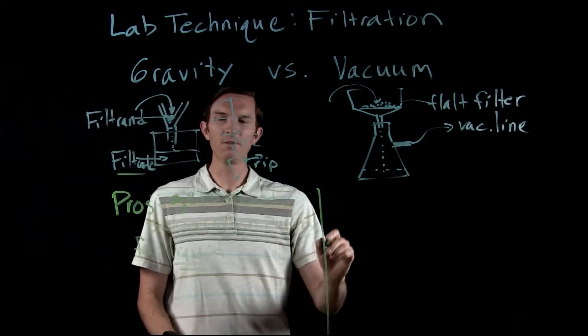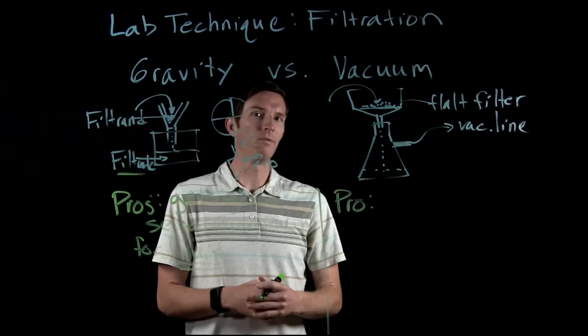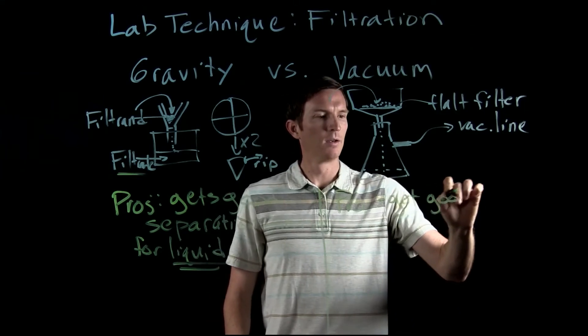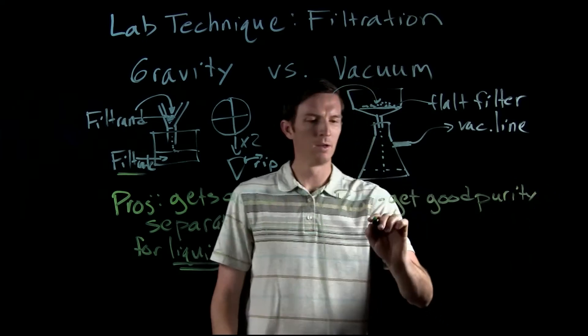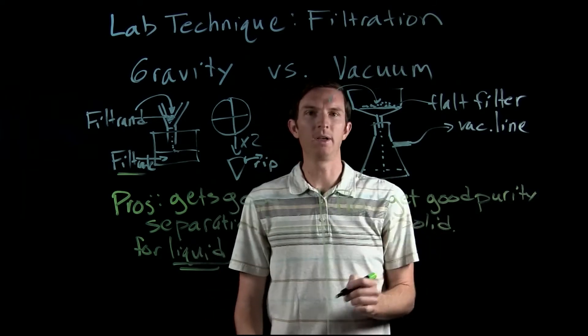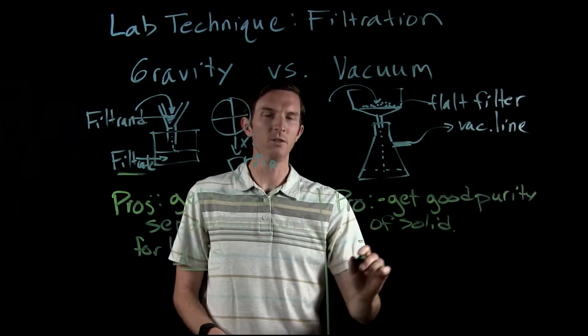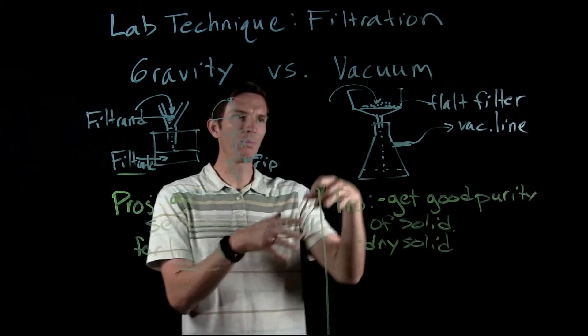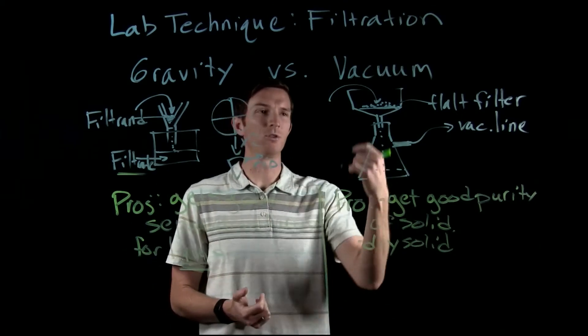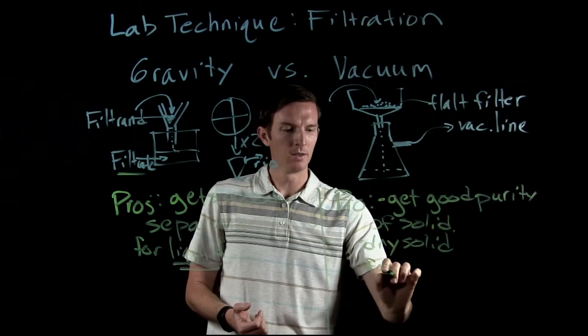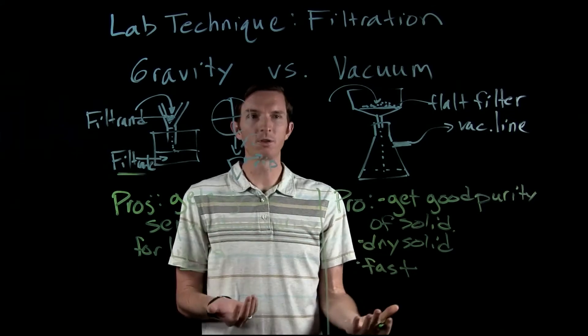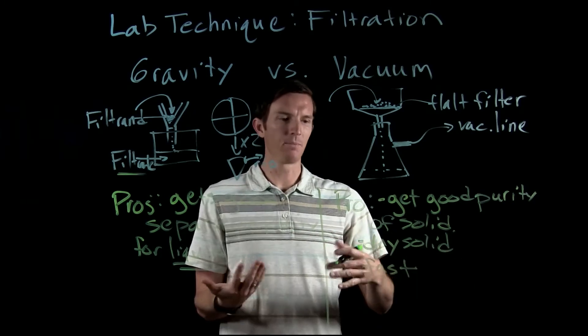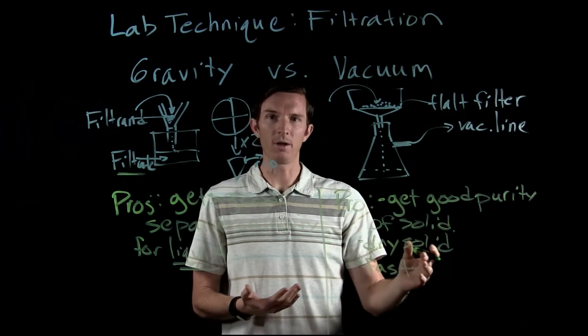Then we talk about our vacuum filtration. The pro of vacuum filtration - the first one is that we get good purity of our solid that we have left over. This is important and usually this is also helpful to dry the solid. So we can easily separate the liquid from the solid, but this is also very helpful in drying our solid. Additionally, this is typically pretty fast. So this works really well for trying to get a solid residue, maybe a crystal we formed, and we're trying to separate that. And this is going to do it quickly, but also dry it very well.